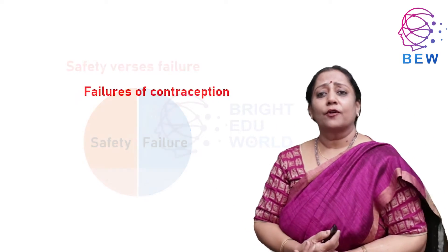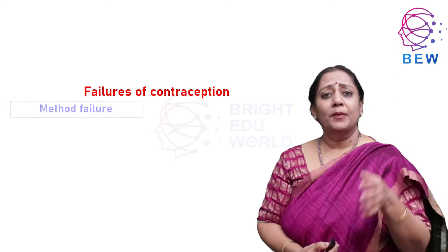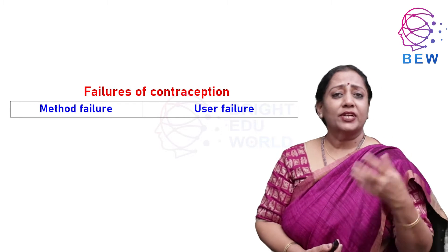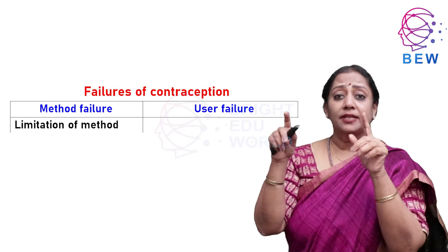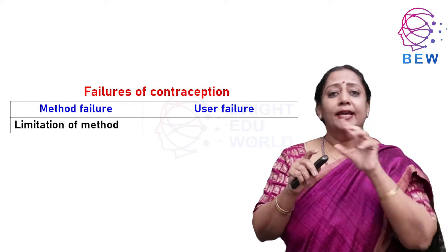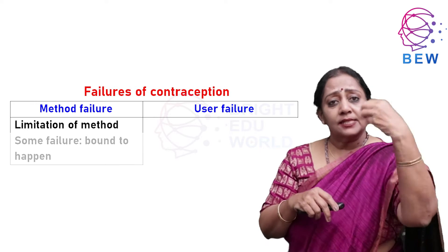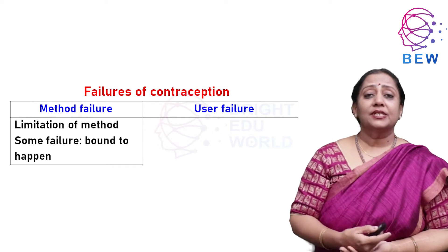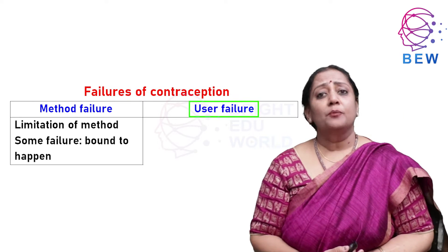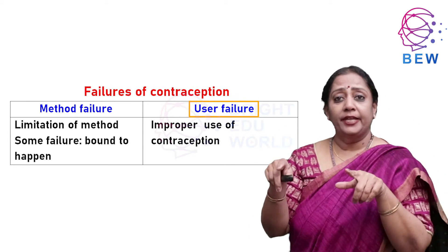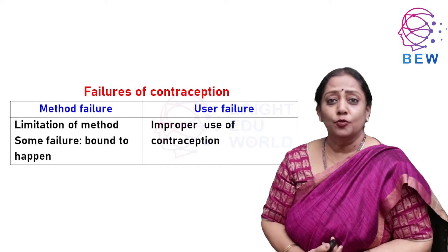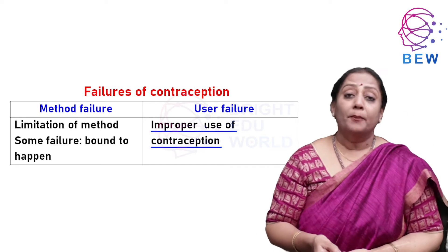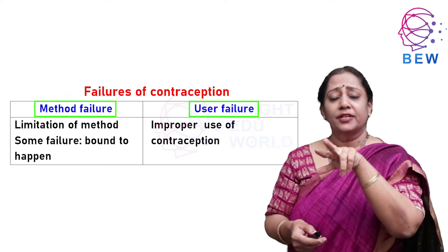When we talk of failure of any contraceptive method, it is basically method failure or user failure. Method failure is a limitation of that particular method — even if anybody uses it 100% correctly, some failures are still bound to happen. User failure, on the other hand, is when the user is not using the method properly as it should be used, and because of improper use there is a failure resulting in pregnancy. Method failure and user failure are two different concepts.